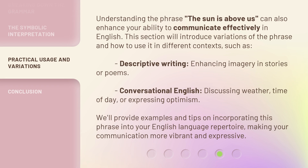Understanding the phrase the sun is above us can also enhance your ability to communicate effectively in English. This section will introduce variations of the phrase and how to use it in different contexts, such as descriptive writing — enhancing imagery in stories or poems — and conversational English, such as discussing weather, time of day, or expressing optimism. We'll provide examples and tips on incorporating this phrase into your English language repertoire, making your communication more vibrant and expressive.